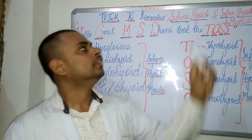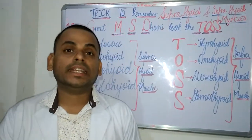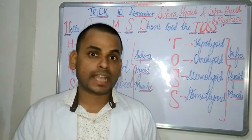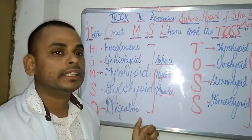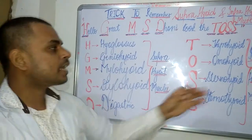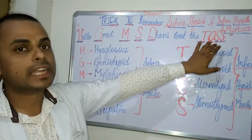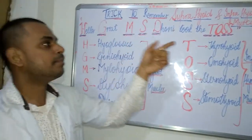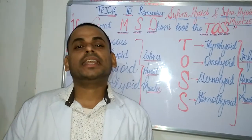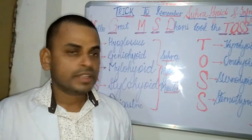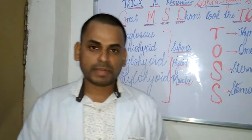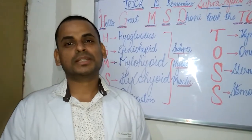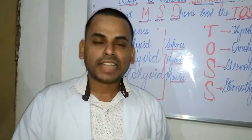In this way, I have made it very easy to remember the suprahyoid and infrahyoid muscles, particularly in competitive exams where MCQs make it difficult to distinguish among four options. At the examination center, just by recalling 'Hello Great MSD Took The Toss,' you can easily select the correct answer. If you like my video, don't forget to subscribe to my channel and press the bell icon to be updated about newer videos. Thank you for watching.